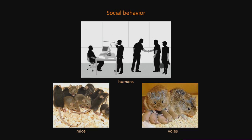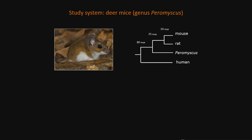As a complement to all of these systems, our lab has been developing a new non-traditional model system: deer mice in the genus Peromyscus. While to many of you this will look like a typical mouse, these guys fall outside of the split between our standard mouse and rat models, which are about 10 million years diverged. Peromyscus fall about 25 million years outside of that divergence, representing their own unique evolutionary lineage. But they're closely enough related that we can borrow genetic and genomic tools and apply them to our studies in Peromyscus.